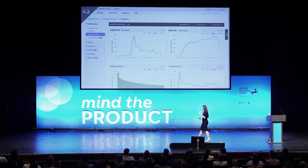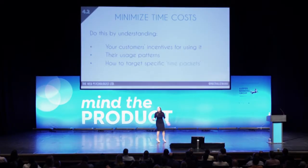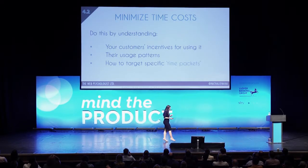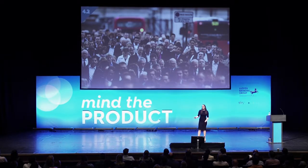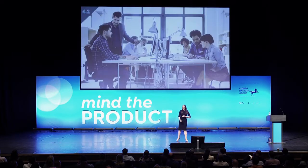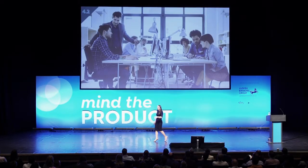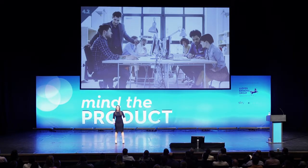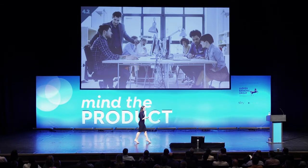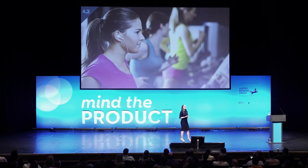You can minimize time costs by understanding people's usage patterns to optimize your product to fit those patterns. There's an analytics app called Flurry by Yahoo that's quite good for this. Once you have analytics data, you can specifically target these pockets of time — like when people are on the tube playing Candy Crush because they've got 15 minutes to kill, or on Wednesday afternoons between three and four when research found lots of people go online shopping because they're bored and far from the weekend.